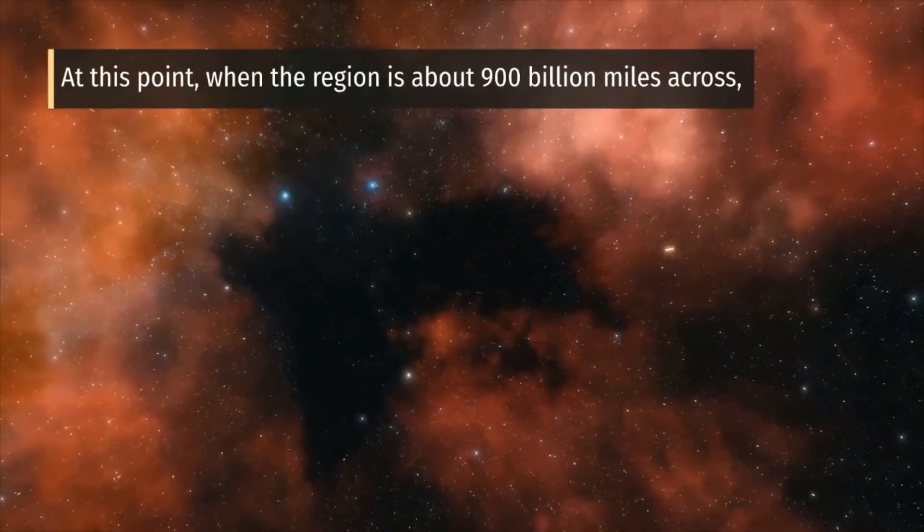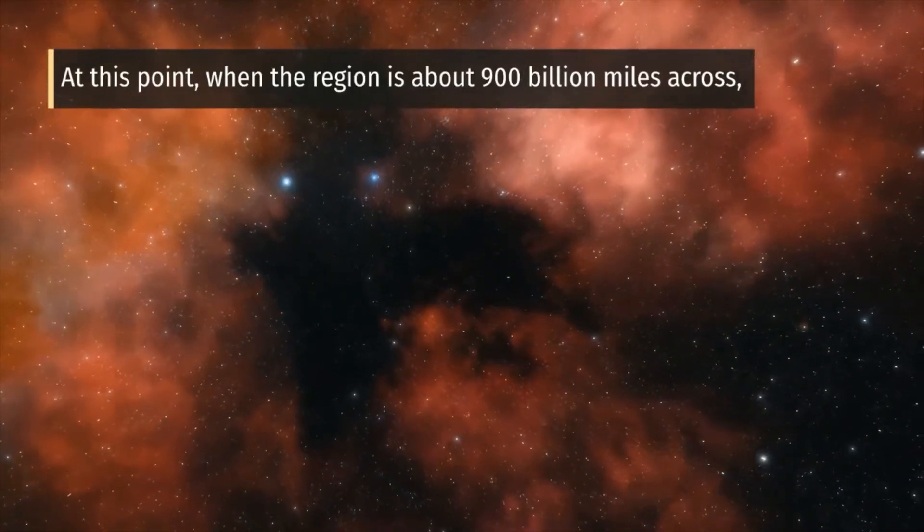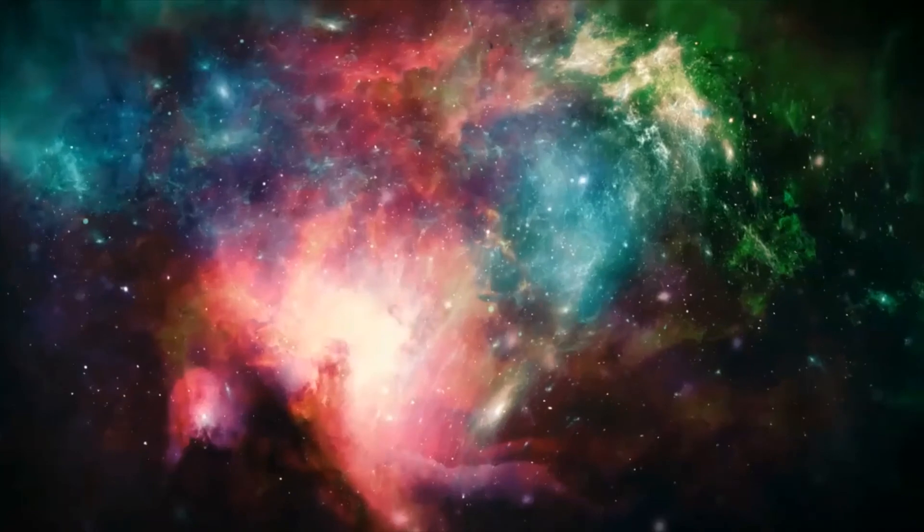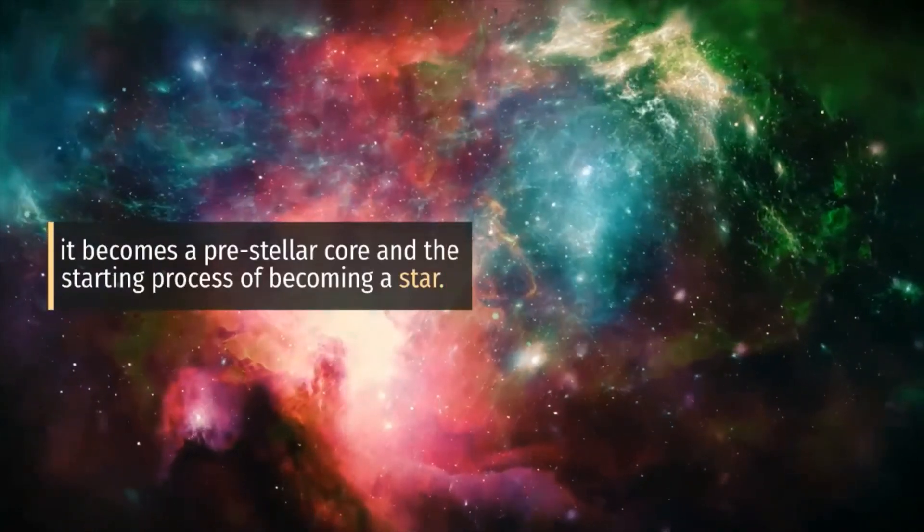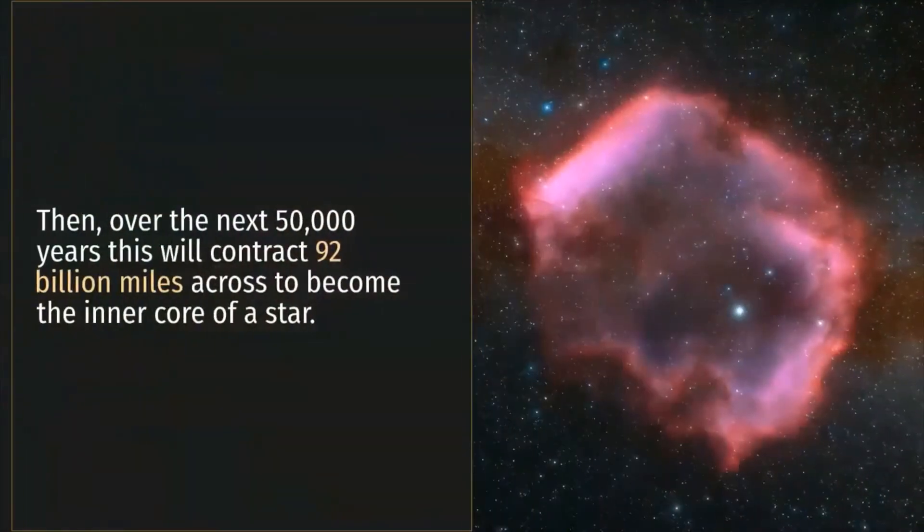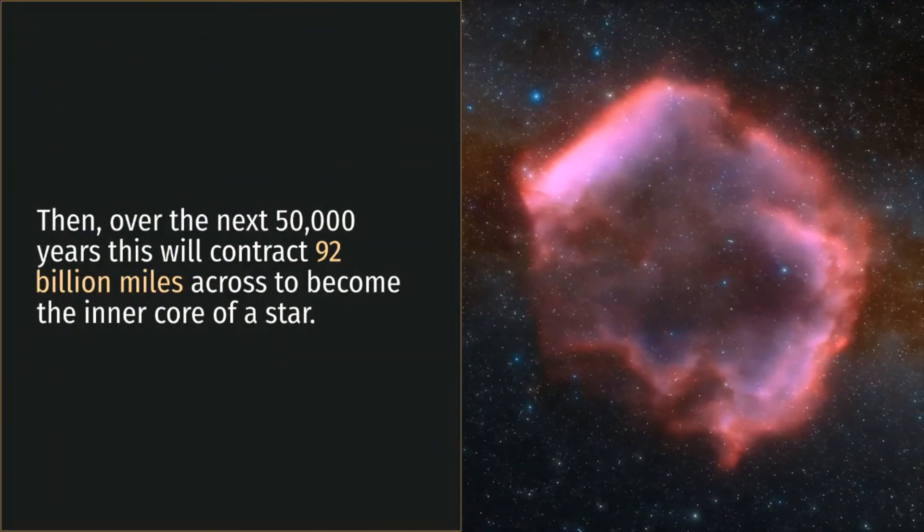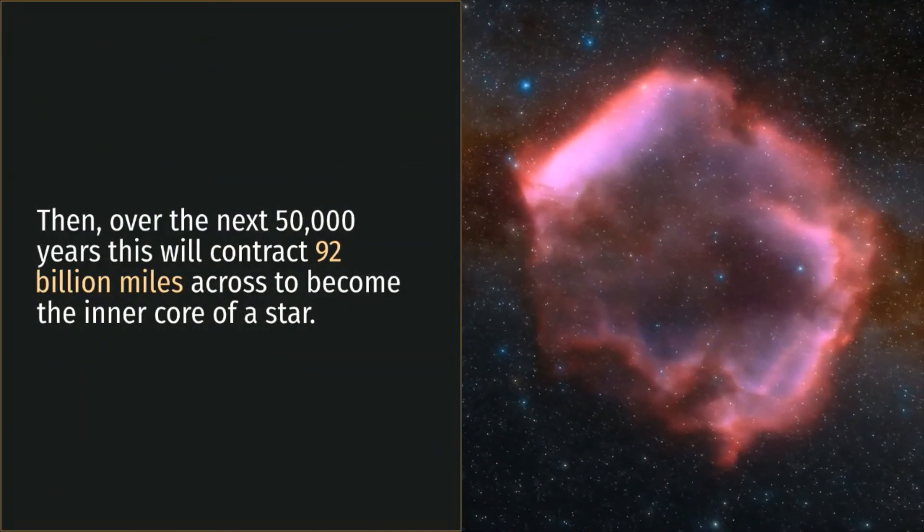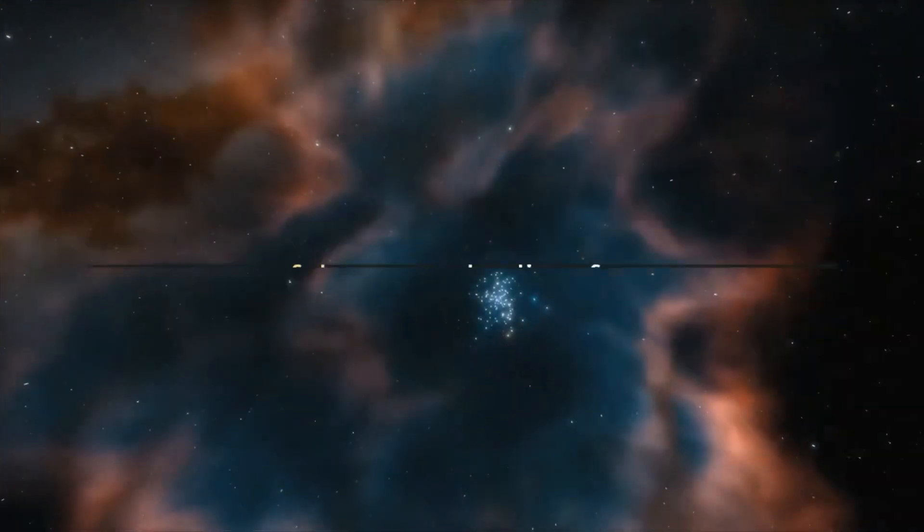At this point, when the region is about 900 billion miles across, it becomes a pre-stellar core and the starting process of becoming a star. Then, over the next 50,000 years, this will contract 92 billion miles across to become the inner core of a star.